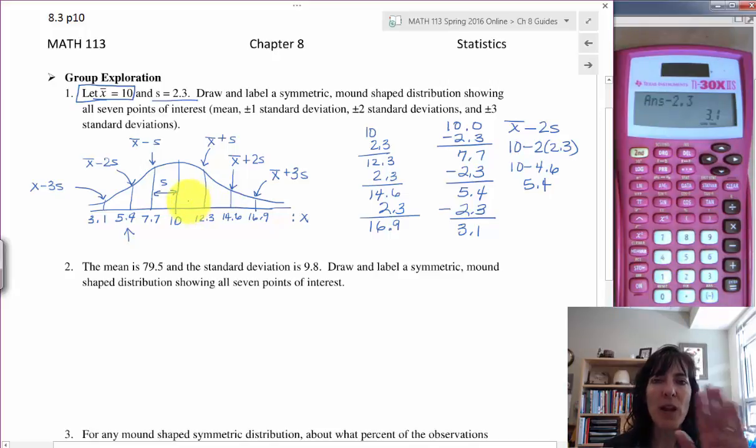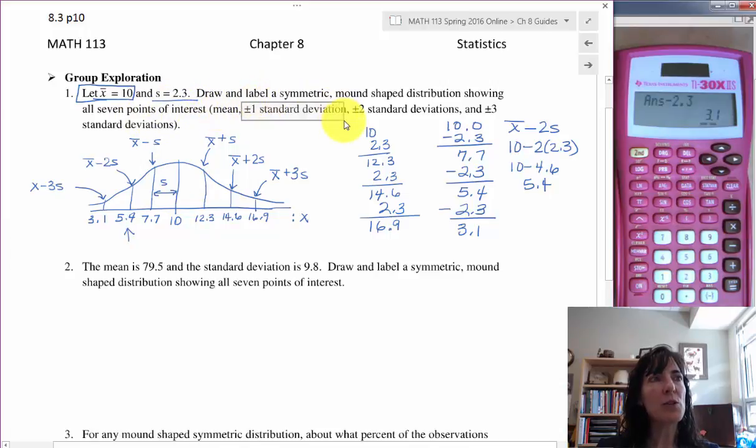Okay, so here we have the mean. That's what the seven points of interest are. We wrote down the mean, we did plus or minus one standard deviation, that's the 12.3 and the 7.7. We did plus or minus two standard deviations, that's the 14.6 and the 5.4. And we did plus or minus three standard deviations, that's the 16.9 and the 3.1.